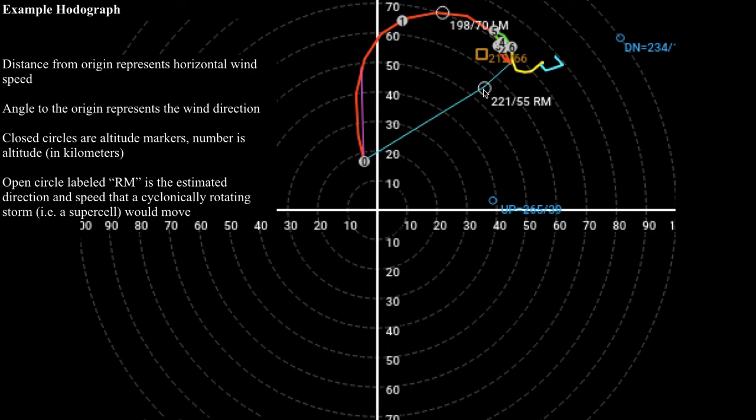They're going to be moving pretty close to 55 knots, that's roughly around 70 miles per hour. So those storms are really going to be moving.